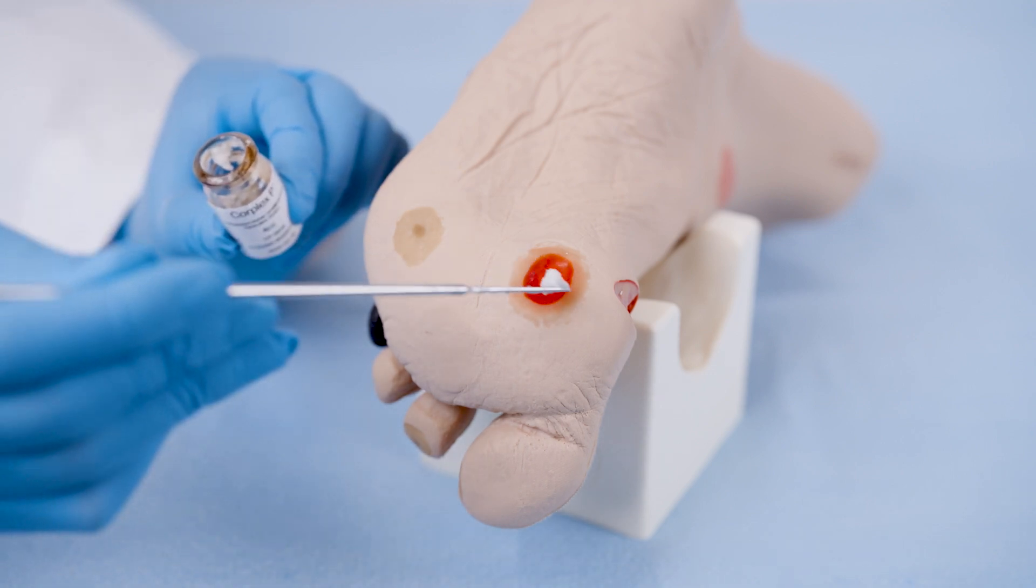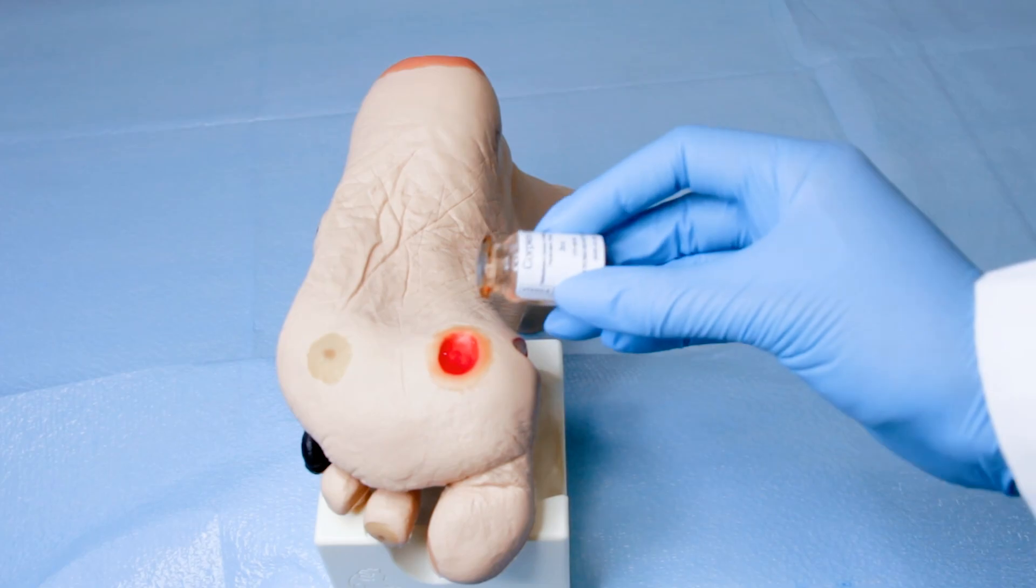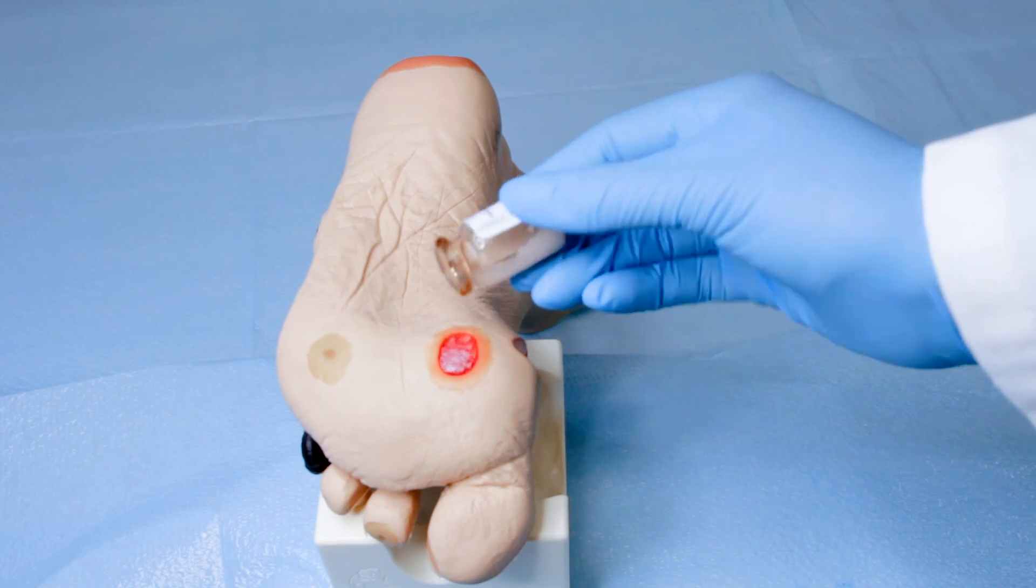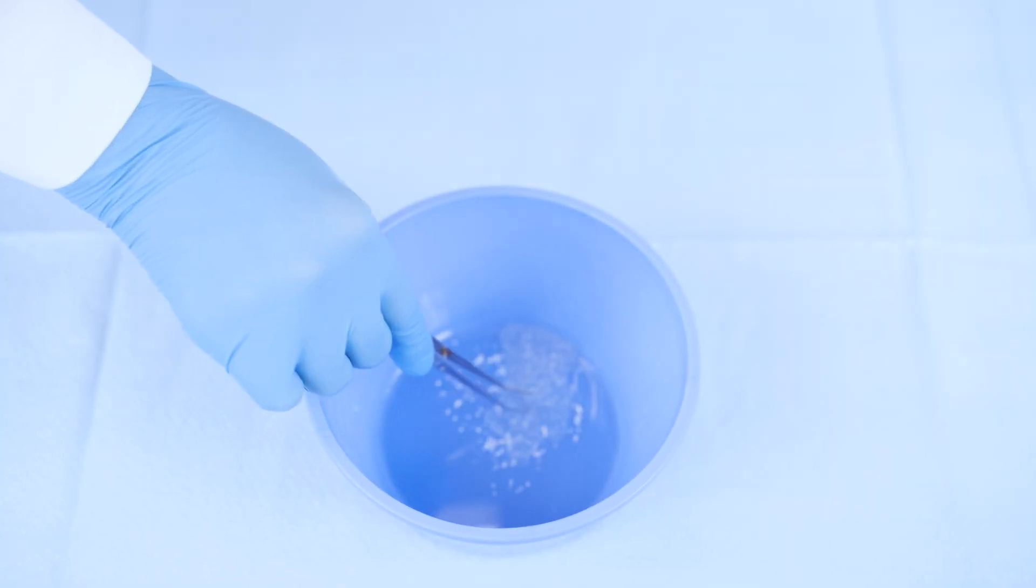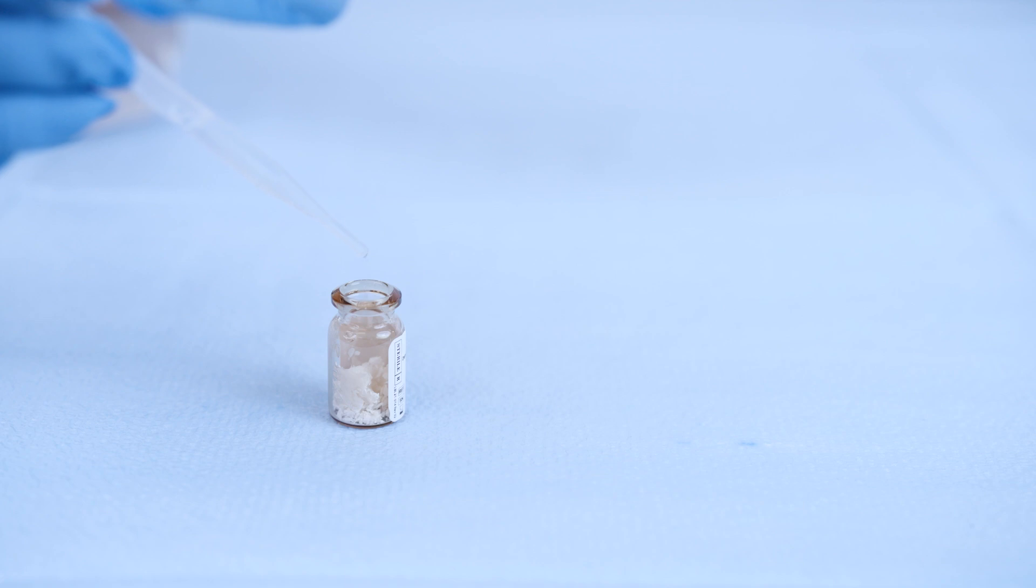CorPlex-P may be applied to the wound in a rehydrated state and may be applied to the wound directly from the vial. Use aseptic technique when preparing and applying CorPlex-P. For a pourable consistency, introduce the recommended volume of sterile 0.9% saline into the open vial.